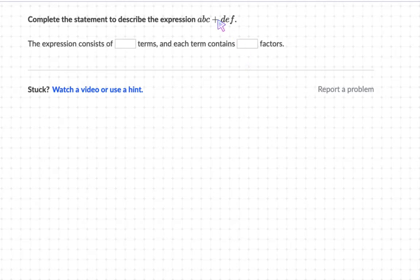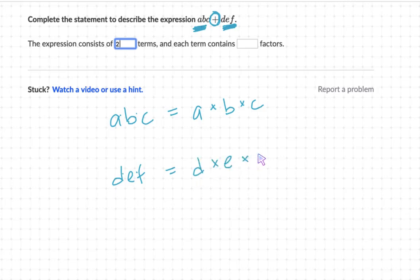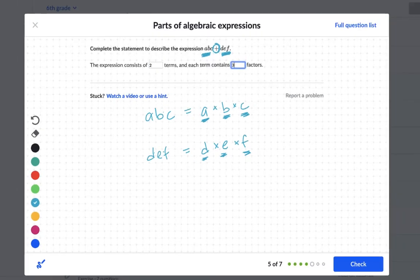Alright. If you remember, terms are being separated by operations. So this is one term here, and this is another term. In this example, there are two terms. The first term is abc. The second term is def. Now we have to look at each term, abc and def, and see how many factors there are. Factors are what make up the multiplication. Each of these have multiplication. So how many factors, how many parts are actually being multiplied? Well, a is being multiplied by b and then c. And here d is being multiplied by e and then f. So each of them has three factors. Three parts that are being multiplied together to make each term.